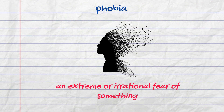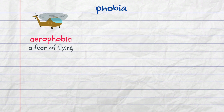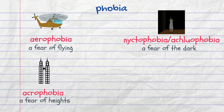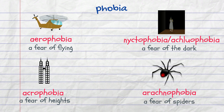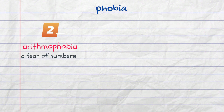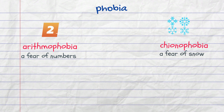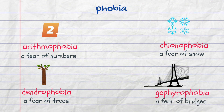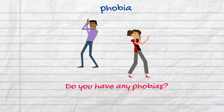A phobia is an extreme or irrational fear of something. There are a lot of different phobias. For example, a fear of flying is called aerophobia; a fear of heights is acrophobia; a fear of the dark is nyctophobia or achluophobia; a fear of spiders is arachnophobia. But some phobias are really peculiar: a fear of numbers is arithmophobia, a fear of snow is chionophobia, and a fear of trees is dendrophobia. Personally, I have a phobia of bridges, which is called gephyrophobia. Do you have any phobias? You can share it in the comments.